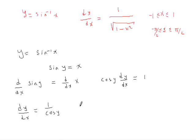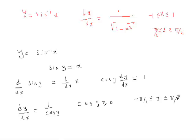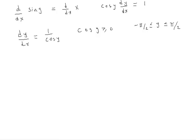Now I want to make the observation that cos y is greater than or equal to 0 whenever y is between negative pi over 2 and pi over 2. You can establish that by looking at the graph of the function cos y between negative pi over 2 and pi over 2.